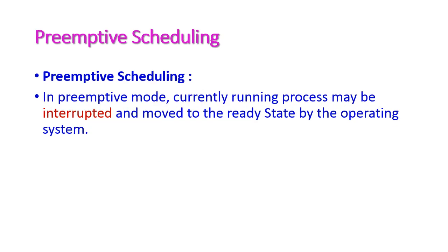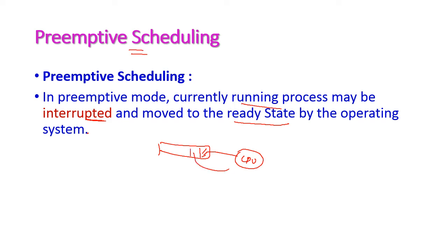The opposite of non-preemptive scheduling is preemptive scheduling. Here, the currently running process may be interrupted and sent back to the ready state by the operating system. Processes wait in the ready queue and execute on the CPU when their turn comes. If another process arrives with higher priority, an interrupt occurs, and the currently executing process goes back to the ready queue while the new process begins executing on the CPU. This is called preemptive scheduling.